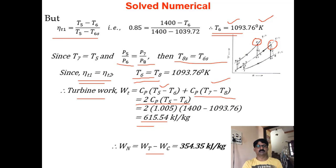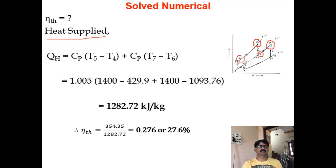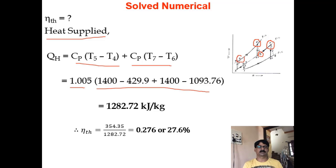To find efficiency, calculate heat supplied. Heat is added from 4 to 5 and also during reheat from 6 to 7. QH = Cp(T5 - T4) + Cp(T7 - T6) = 1282.72 kJ/kg. Cycle efficiency = W_net / QH = 354.35 / 1282.72 = 27.6%.